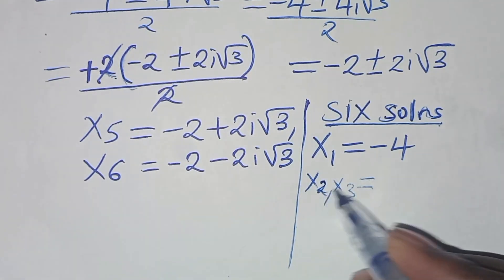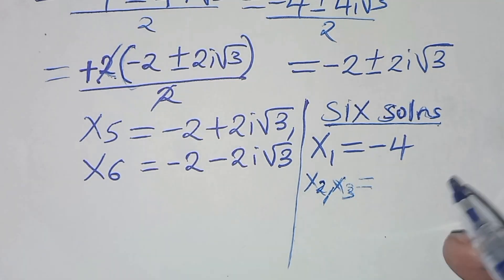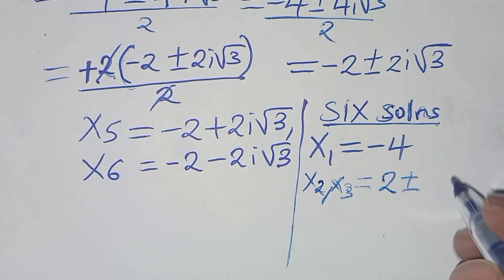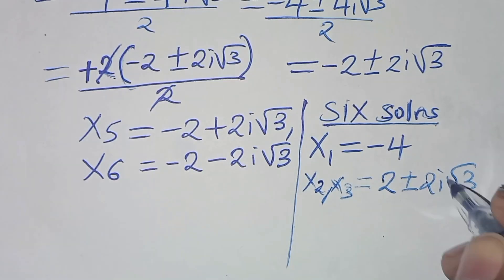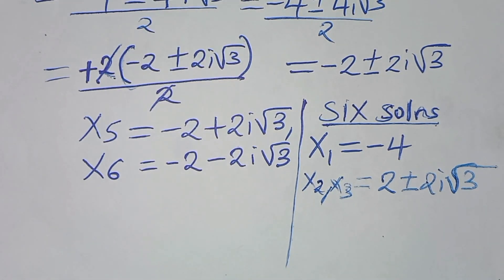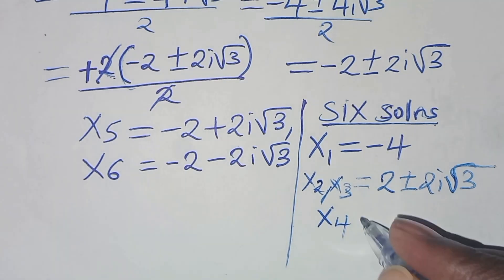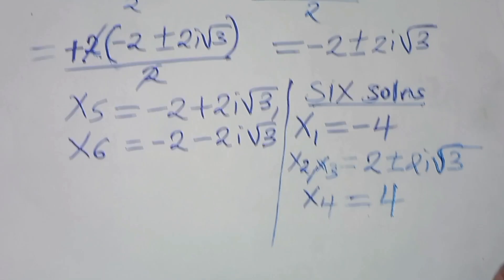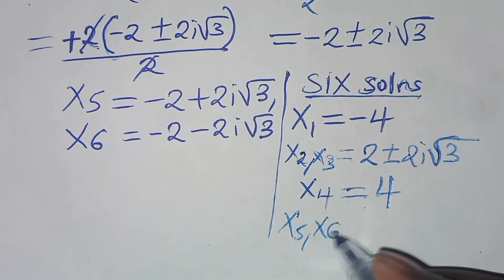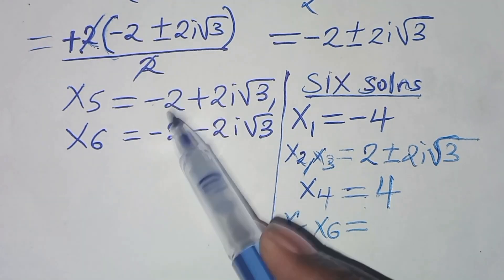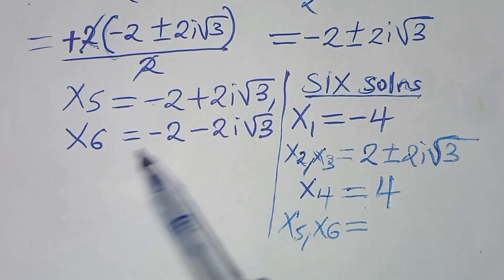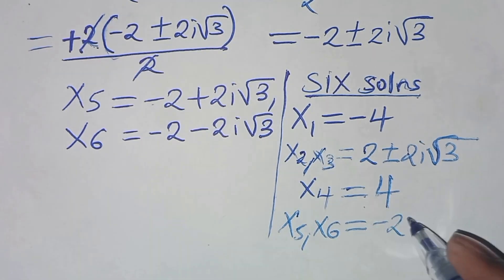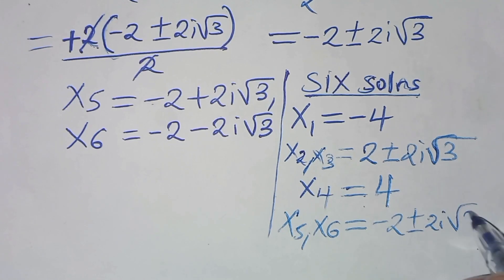In summary, the six solutions are: x₁ = −4, x₂ and x₃ = 2 ± 2i√3, x₄ = 4, and x₅ and x₆ = −2 ± 2i√3. Thank you for watching, and kindly subscribe.